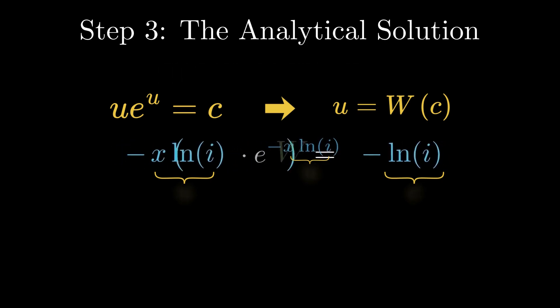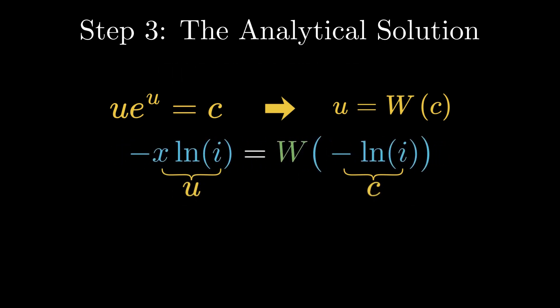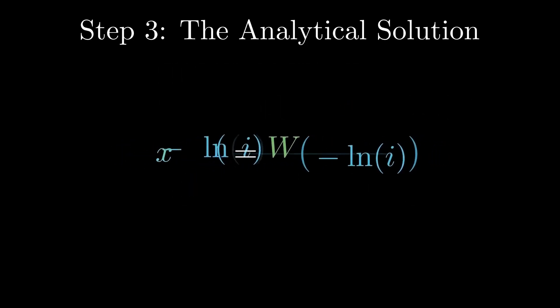Applying Lambert W allows us to isolate the variable explicitly. The solution can now be written as a ratio involving Lambert W and the natural log of i.